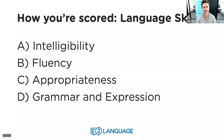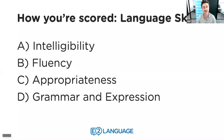Language skills cover four things: intelligibility, fluency, appropriateness, and grammar and expression. Intelligibility refers to how clearly you can say all of the sounds in English — there are 44 consonant and vowel sounds. It also includes consonant clusters like 'fl', 'dr', or 'cr' — two or more consonants coming together. That's intelligibility: the clarity of your speech. Fluency refers to the speed at which you speak — a moderate tempo, not too quickly or too slowly — but it also includes fillers and hesitations.